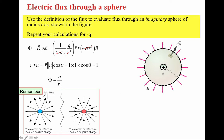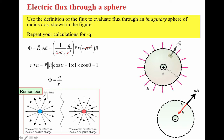What happens if the charge is negative? For a positive charge, the electric field is radially outwards. However, if the charge is negative, the electric field is radially inwards. In that case, the angle between dA and E becomes 180°, and cosine(180°) = −1. So R-hat·N-hat = −1, and the flux becomes −Q/ε₀, whereas for a positive charge it was Q/ε₀.